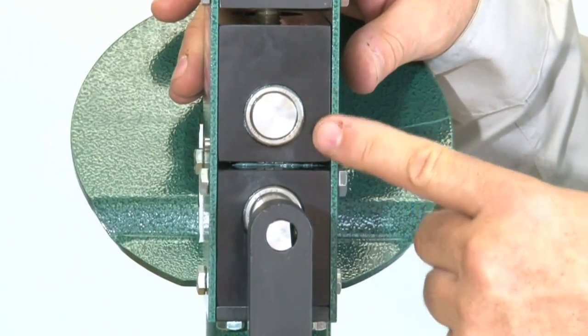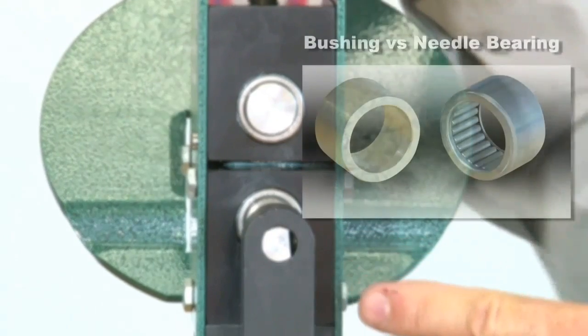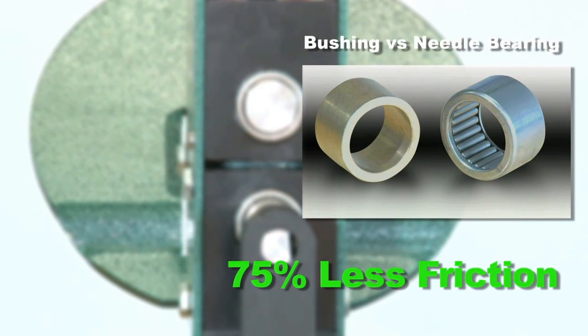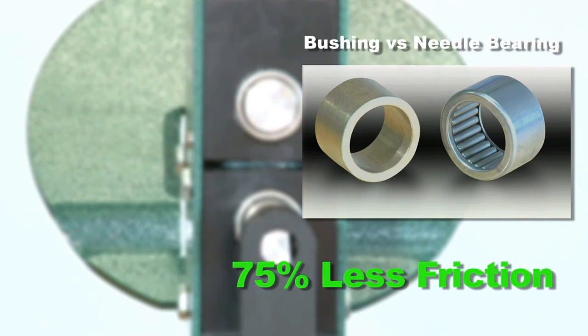RAMS uses Torrington needle bearings instead of bushings which provide 75% less friction for smoother operation.